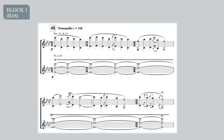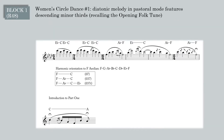The scene begins with a sudden reduction in density and intensity from the end of the previous scene. As we move abruptly from a triumphal victory dance in military mode to a modest circle dance in pastoral mode, we hear a slow-moving melody in octaves accompanied only by a trill on E-flat and F, which continues from the previous scene. The melody, which I call women's circle dance number one, is diatonic; its notes belong to F aeolian.